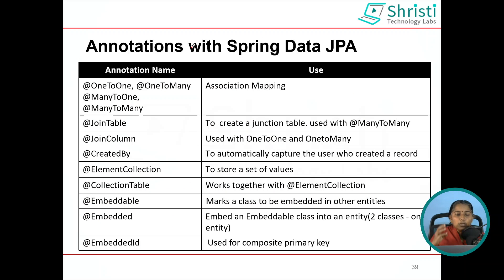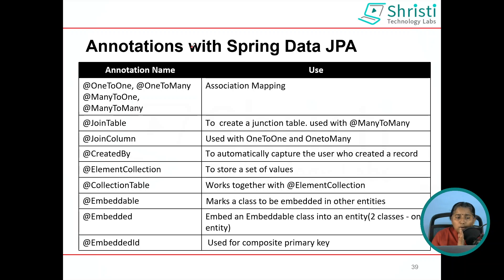Next: @OneToOne, @OneToMany, @ManyToOne, @ManyToMany — all these come under association mapping. One-to-one: one product can have one feature, where the feature class can have material, length, dimension, type, size, and so on. One-to-many: one product can have many offers. Many-to-one: many products can belong to one brand. Many-to-many: one product can belong to many categories, and one category can have many products. All these come under association mapping.